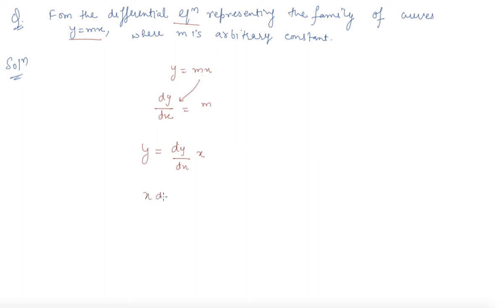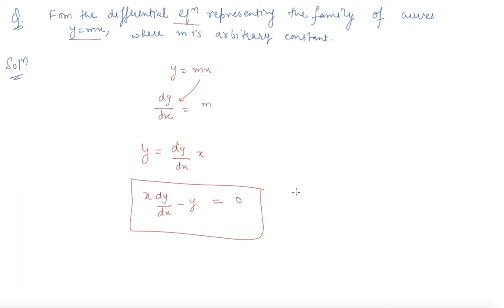This is the differential equation that we get. I can rearrange it, and this is the differential equation that we got. I hope it is pretty clear to you how to form a differential equation. Now let us take one more example in which there will be two arbitrary constants.